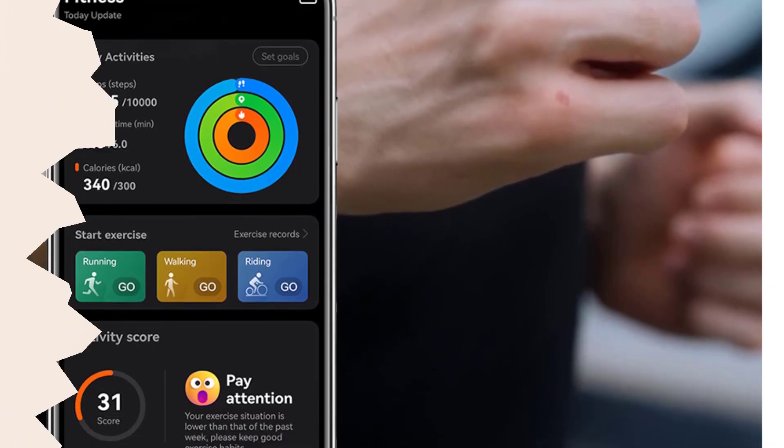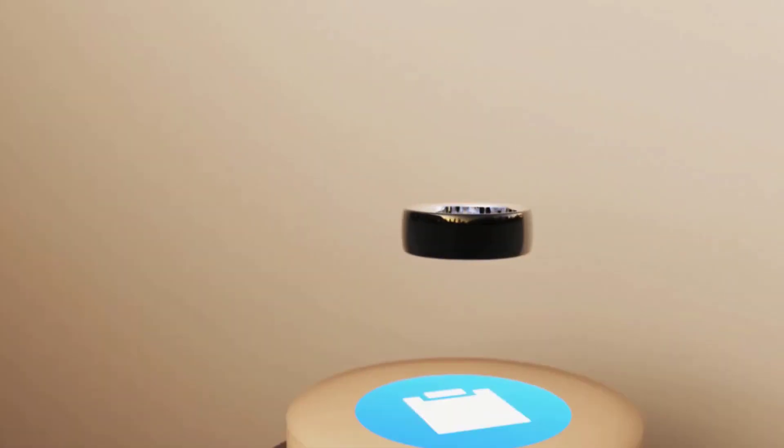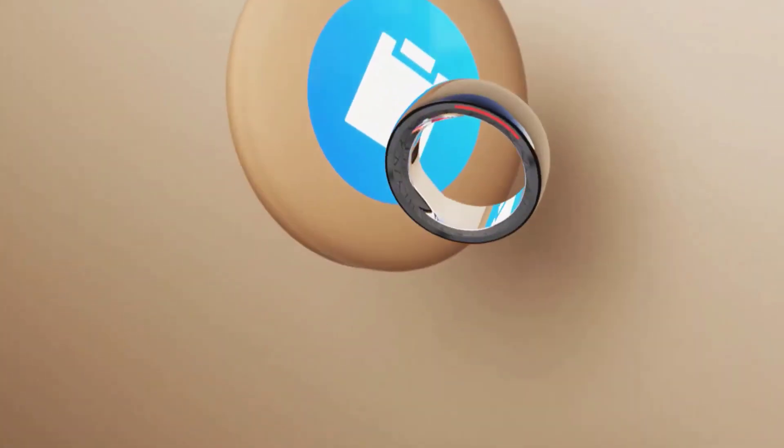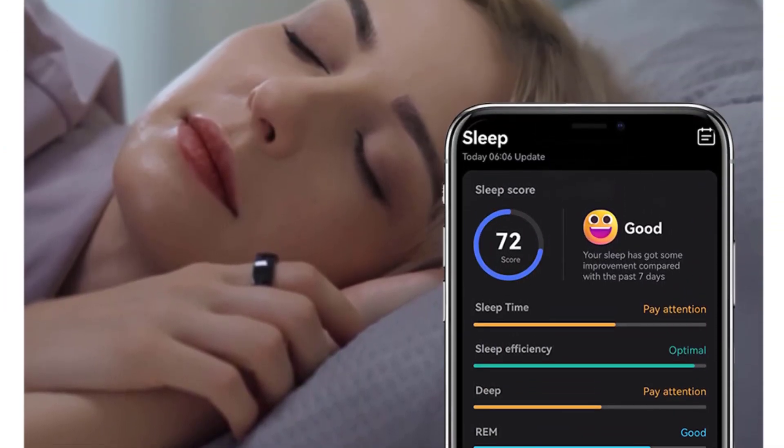All of the data syncs right to the ROGBID app on your phone so you can monitor health metrics, set custom alerts and goals, and analyze trends over time. It's great to have all that health insight right on your finger.